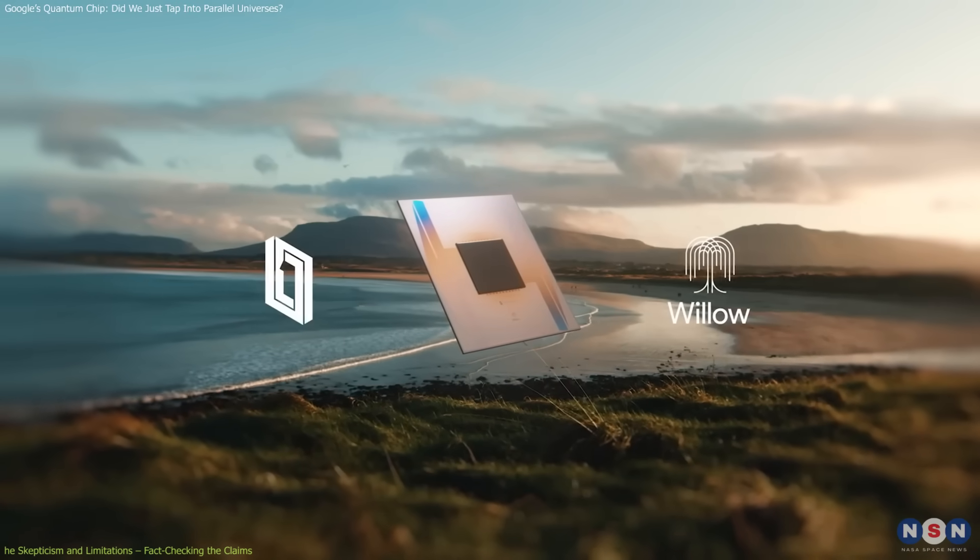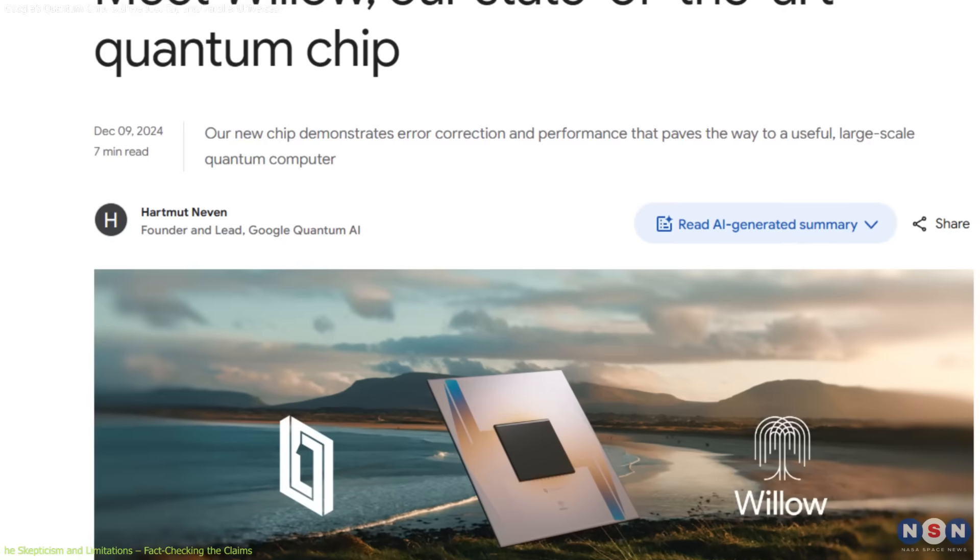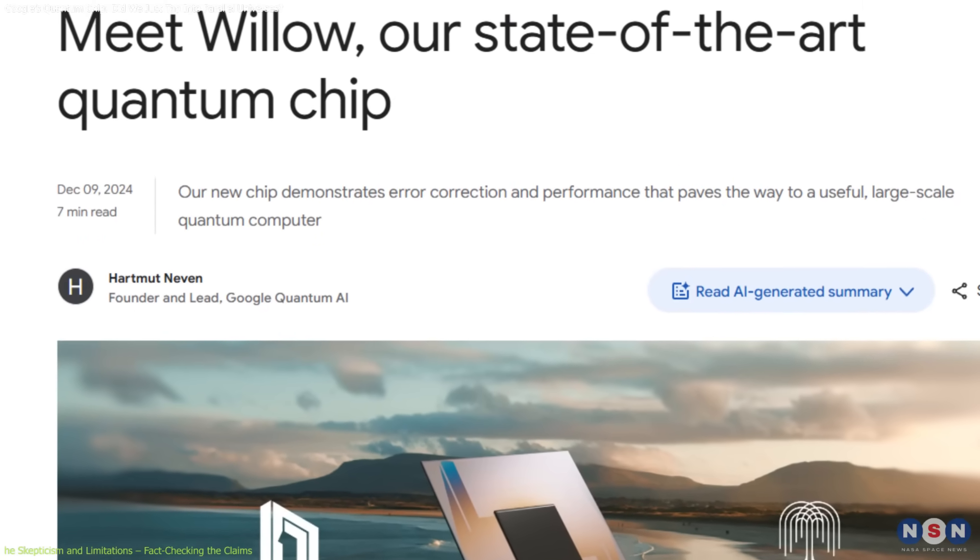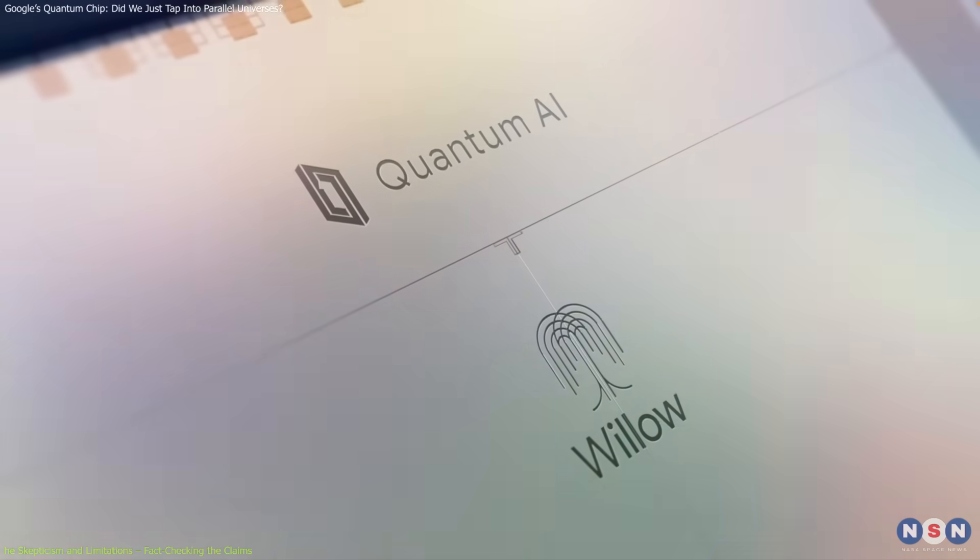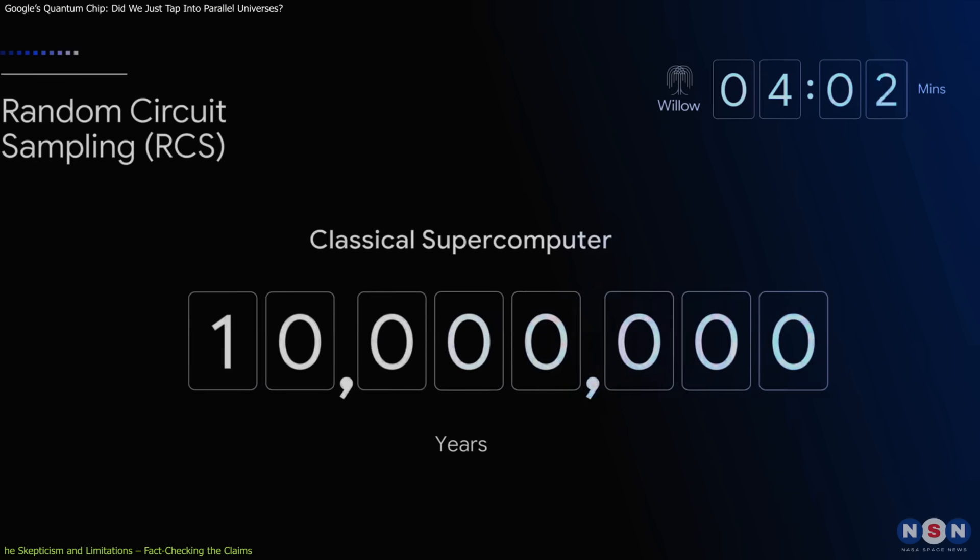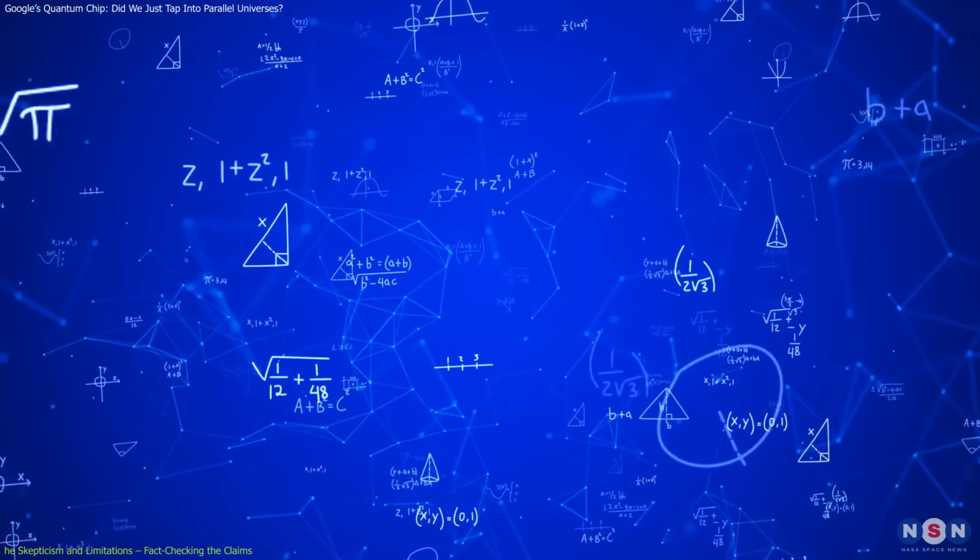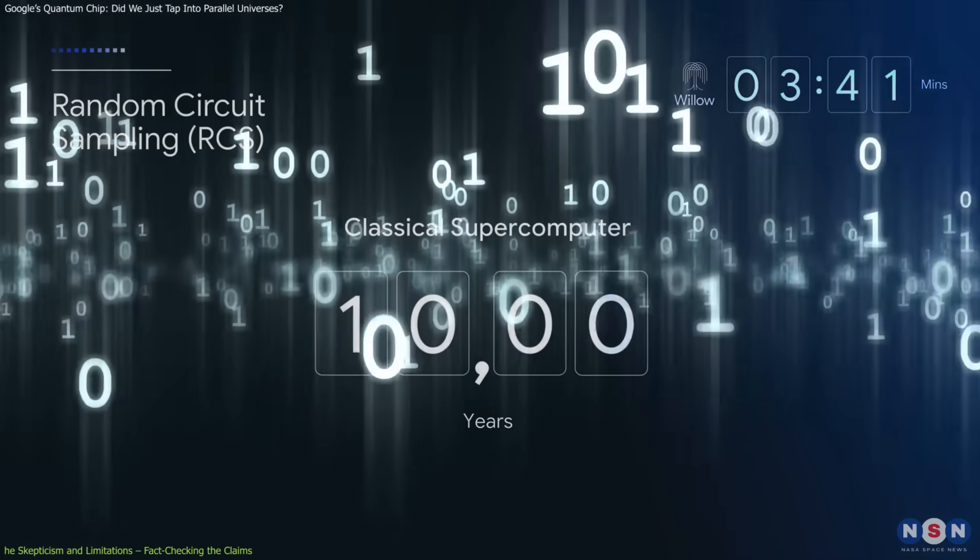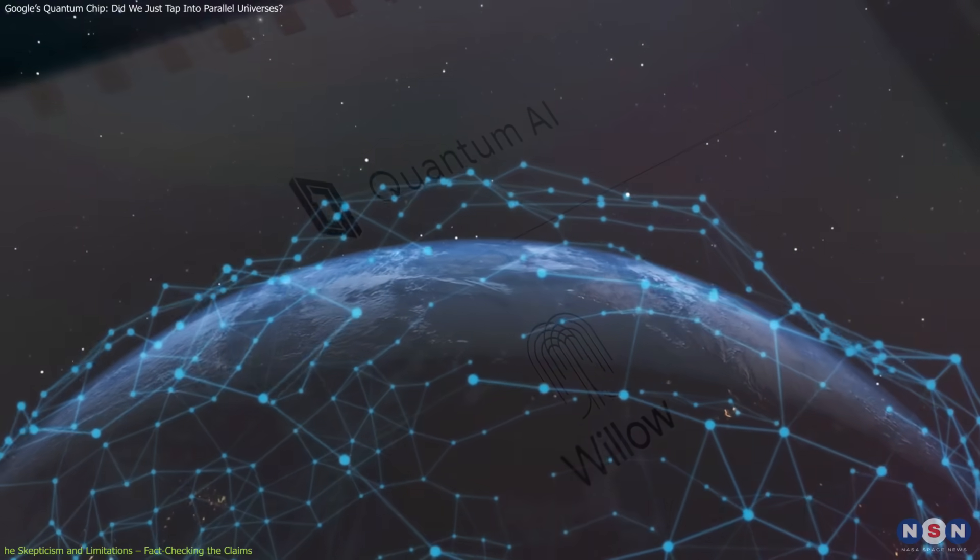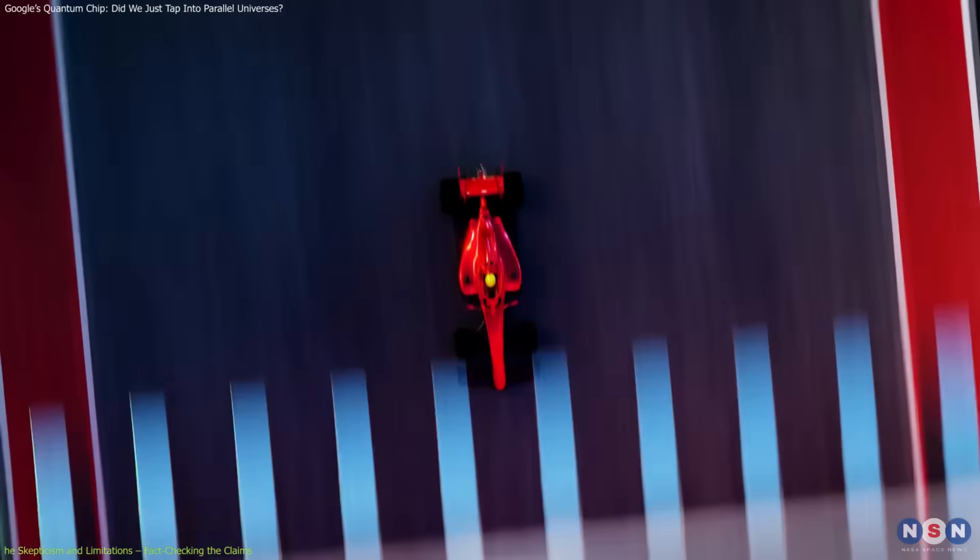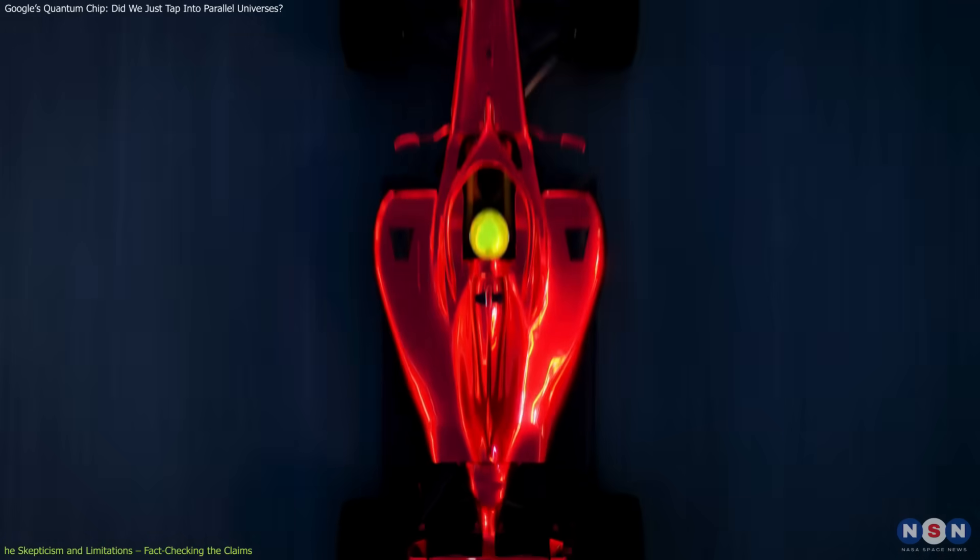As exciting as this all sounds, not everyone's on board. Scientists and skeptics have raised some valid concerns about Google's announcement. And it's worth digging into them. First, there's the issue of practical relevance. Willow's achievement involved solving a random distribution benchmark, which is a theoretical problem chosen to highlight quantum performance. Critics, like physicist Sabine Hossenfelder, argue that while this is impressive, it doesn't have any immediate real-world applications. It's like building the fastest race car, but only testing it on an empty track. Cool, but not exactly useful yet.